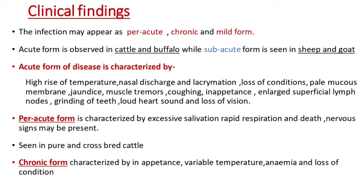Coming to clinical findings, the infection may appear as peracute, chronic, and mild form. It is to be noted that acute form is observed in cattle and buffalo, while subacute form is seen in sheep and goat. Acute form of disease is characterized by high rise of temperature, nasal discharge, lacrimation, loss of condition, pale mucous membrane, jaundice, muscle tremors, coughing, inappetence, enlarged superficial lymph nodes, etc.